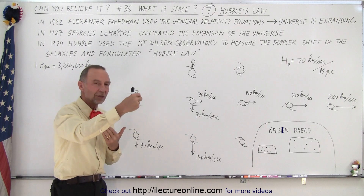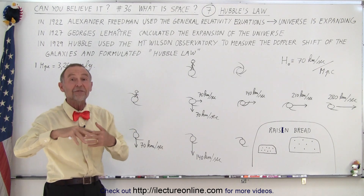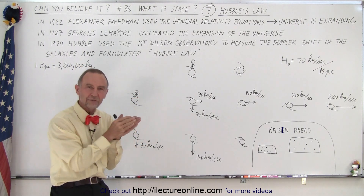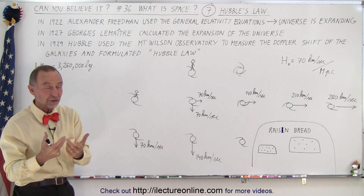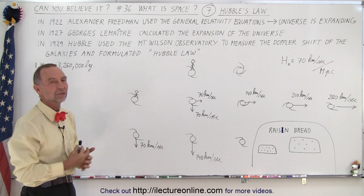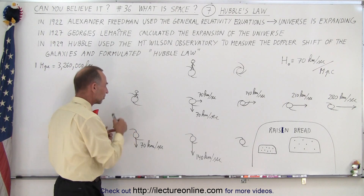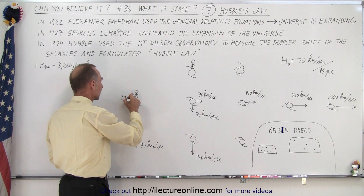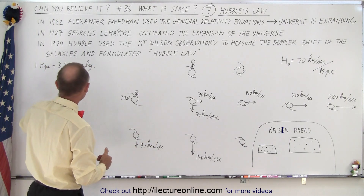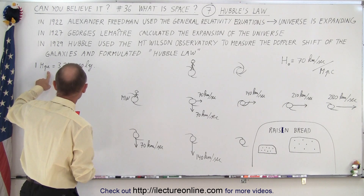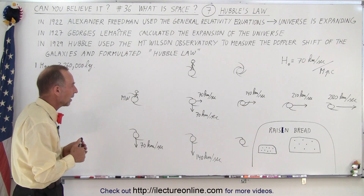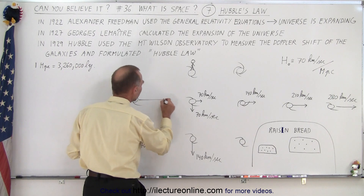Whenever an object is moving away from us, the light that reaches us will have decreased in frequency and increased in wavelength — we call that the redshift, because the light shifts toward the red end of the spectrum. We were able to measure that shift and from it determine how fast the galaxies were moving. He then made a monumental discovery. Looking at our Milky Way galaxy and a galaxy one megaparsec away — a megaparsec being one million times 3.26 light years, or about 3.26 million light years — he began to notice a pattern.